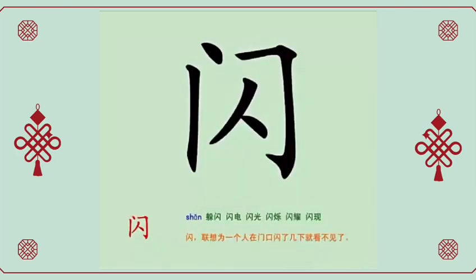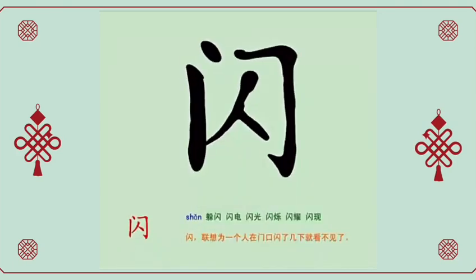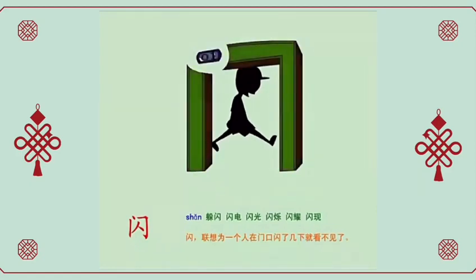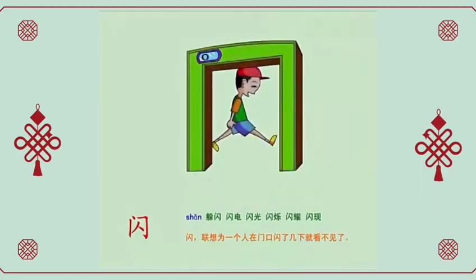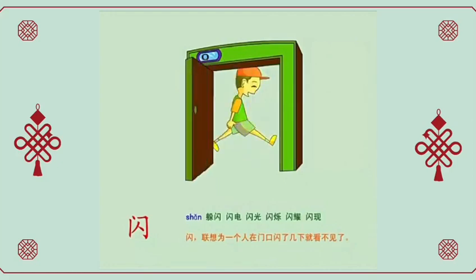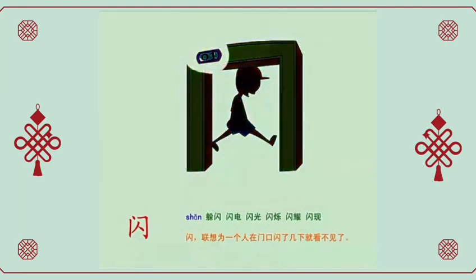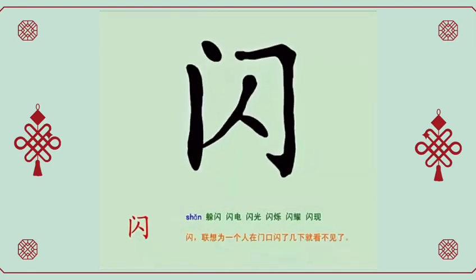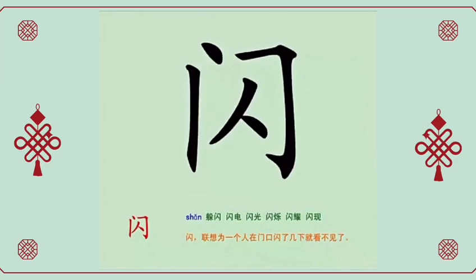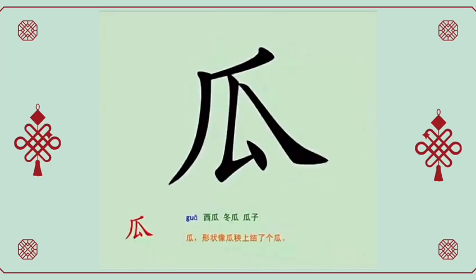闪 means flash or to dodge. Imagine a person standing at the door, dodging a few times before disappearing. 闪, dodge. 闪, lightning. 闪光, flash of light.